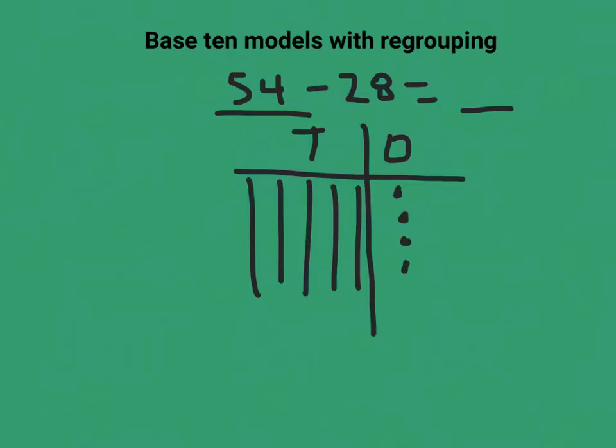Now what I need to do is look at getting rid of two tens. So I got rid of two tens. Now I need to get rid of eight ones. And this is where the trick comes in, the little bit of a problem. I don't have eight ones over here. I only have four ones.